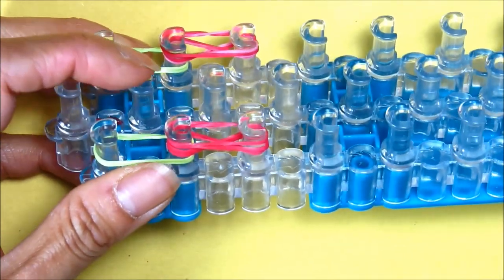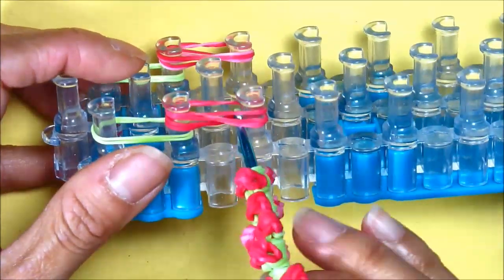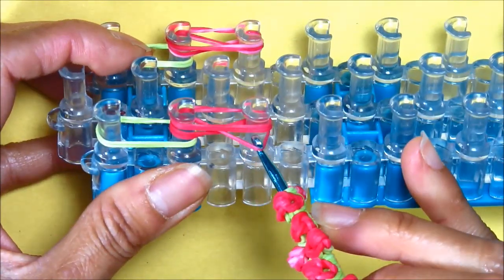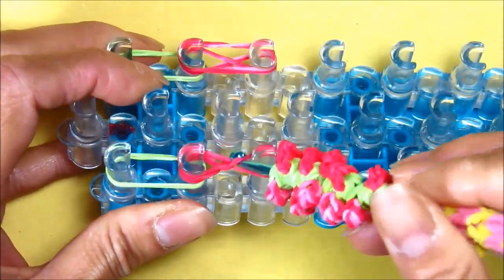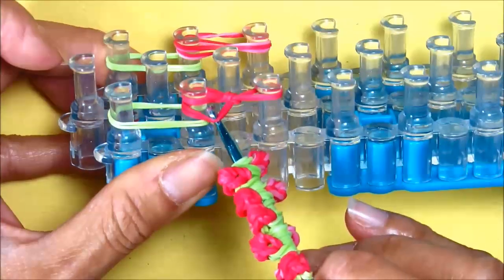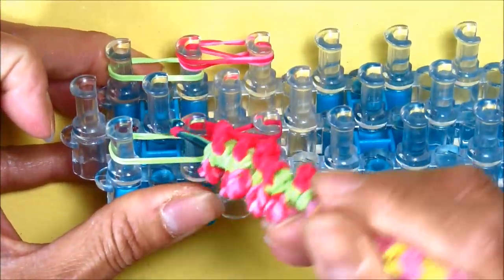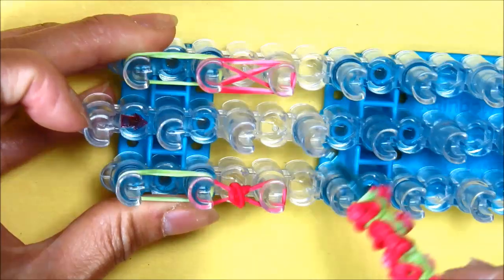And we'll tie the knot. So reach under in the third peg, grabbing the bottom band and pulling it to the center, and going to the second peg, grabbing the bottom band, leaving a knot in the center.